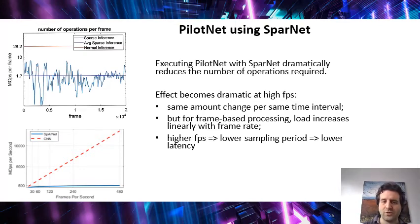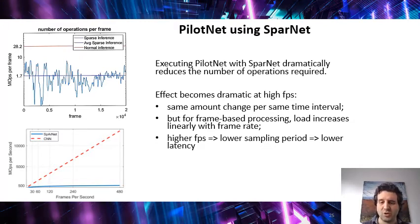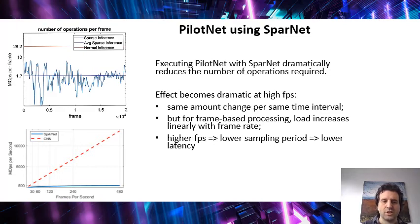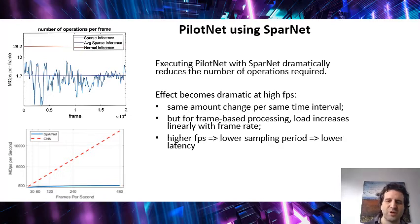But the amount of executions I need doesn't grow much — it grows a bit, of course, because of noise. There's some change that is not really important, but if you have more frames you're going to see more small unimportant changes. Still, from 30 frames per second to 480, we kind of increase the load by about two times — nothing compared with what happens in this system, which would grow by more than 15 times. So essentially, we can handle much higher frames per second, and because we can have much higher frames per second, we also get a lower sampling period and therefore a lower latency.